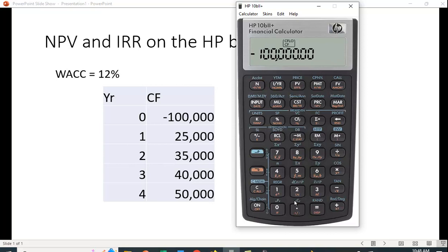Let's go to the second value: 25,000. We just hit that CFJ key. 35,000, 40,000, and 50,000 for the last cash flow.